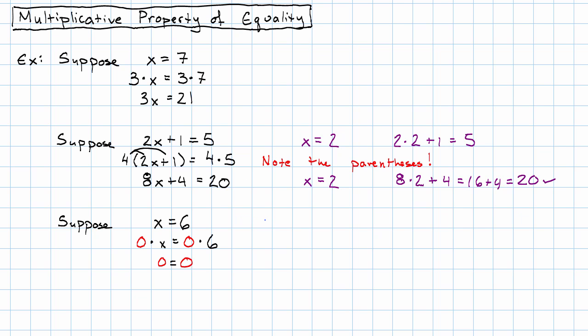Notice what happened. This equation up here has only one solution. But this equation down here is true no matter what x is. The second equation that we ended up with has every number as a solution. That's no good. These are not equivalent.